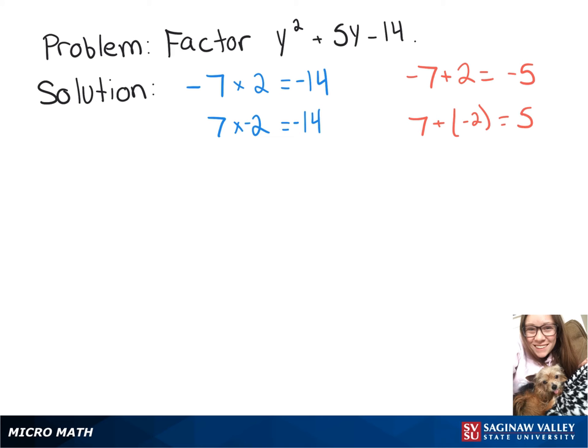So those are the numbers that we're going to use. Now we can rewrite this as y squared plus 5y minus 14 equals, and then we'll have y plus something in parentheses here, y plus something in parentheses here. And then the two numbers we just found are plus 7 and minus 2. So this is our factored form of this trinomial.